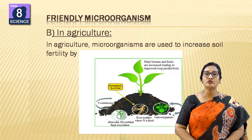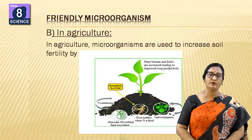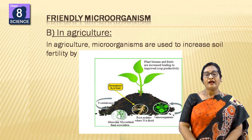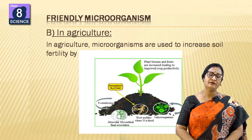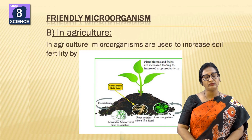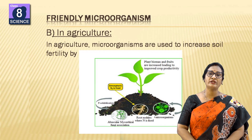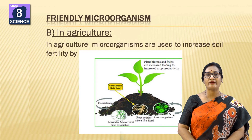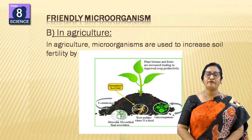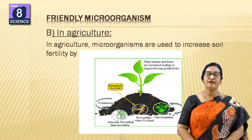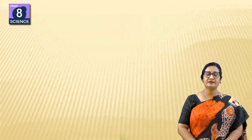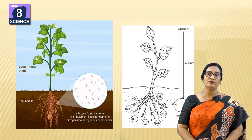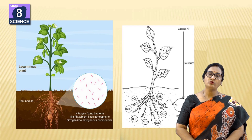Microorganisms also play a special role in agriculture by increasing soil fertility. When various animals and plants die, their bodies decompose, and microorganisms help convert the organic matter into simpler compounds, forming humus and making the soil fertile for better crop production.